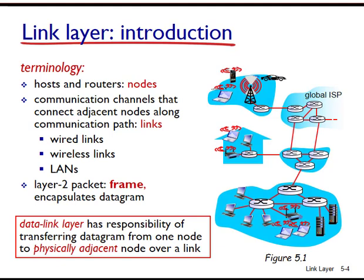As an example, in the company network shown at the bottom of Figure 5.1, consider sending a datagram from one of the wireless hosts to one of the servers. This datagram will pass through six links: a Wi-Fi link between the sending host and the Wi-Fi access point; an Ethernet link between the access point and the link layer switch; another link between the link layer switch and the router; a link between the two routers; an Ethernet link between the router and the link layer switch; and finally, an Ethernet link between a switch and the server. Over a given link, a transmitting node encapsulates the datagram in link layer frames and transmits the frame into the link.